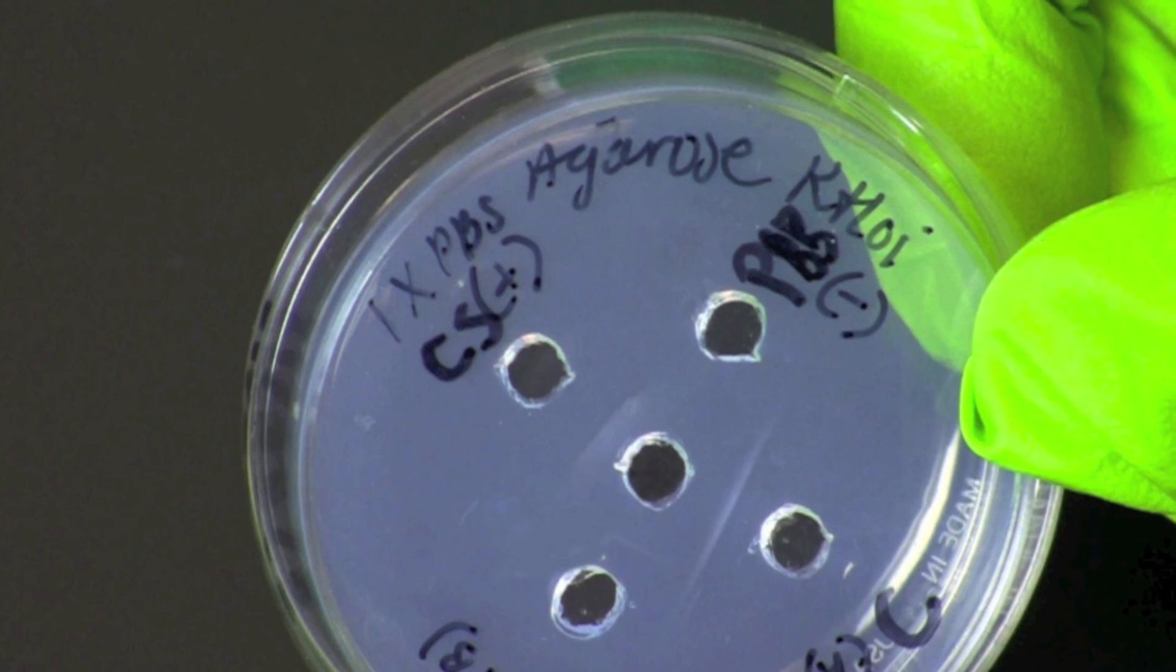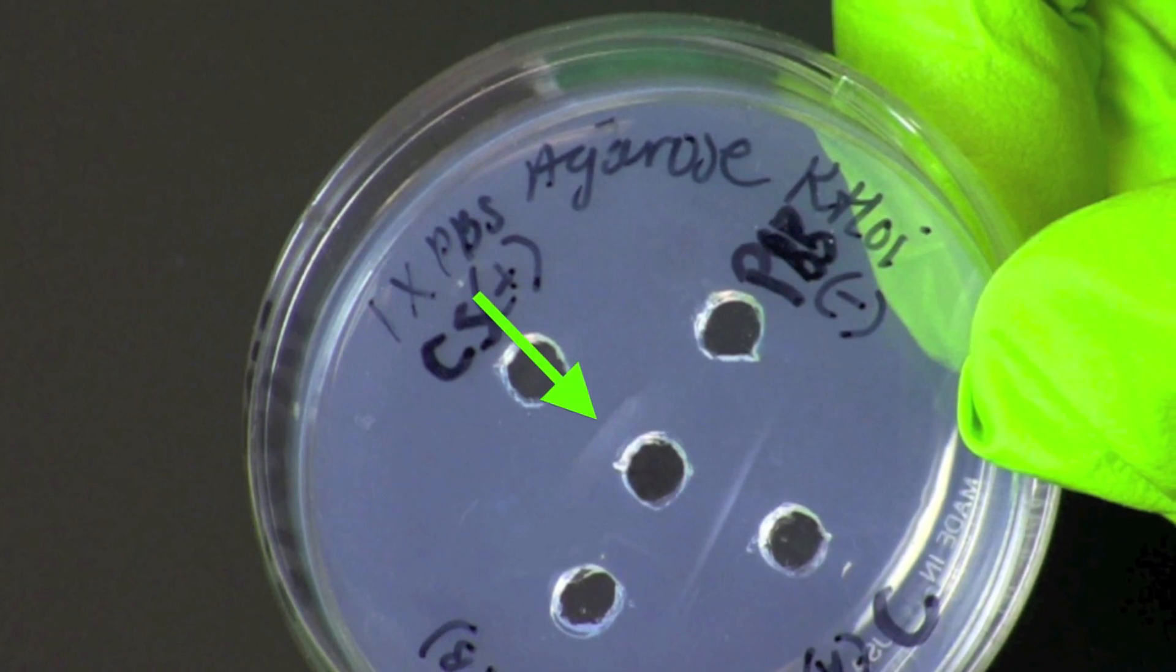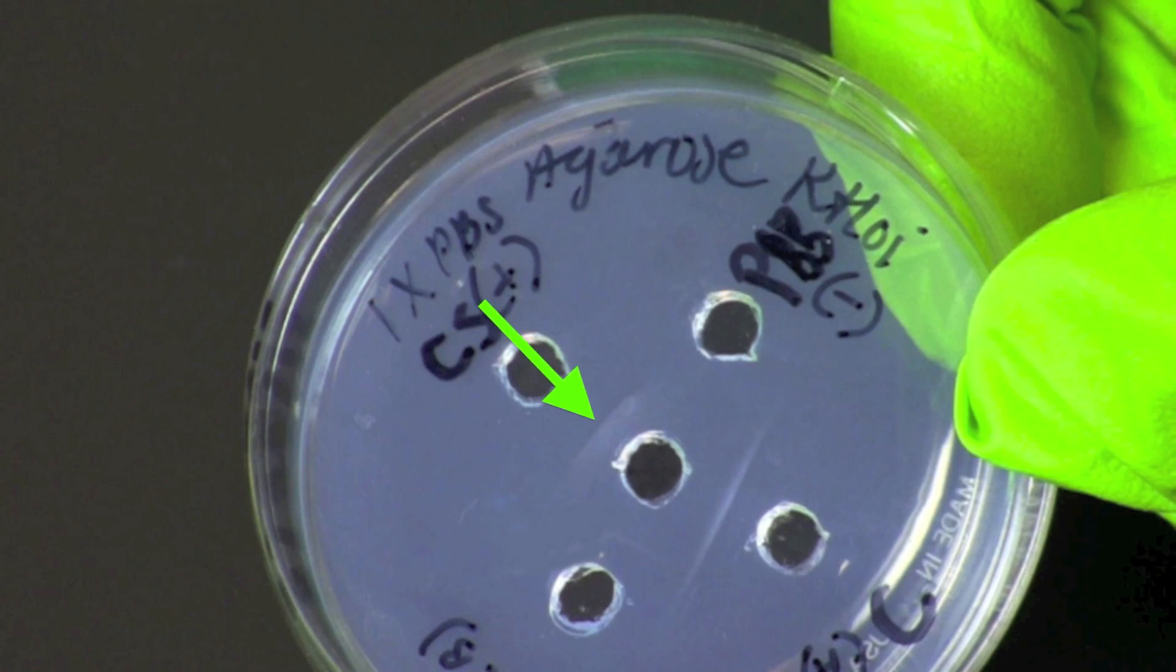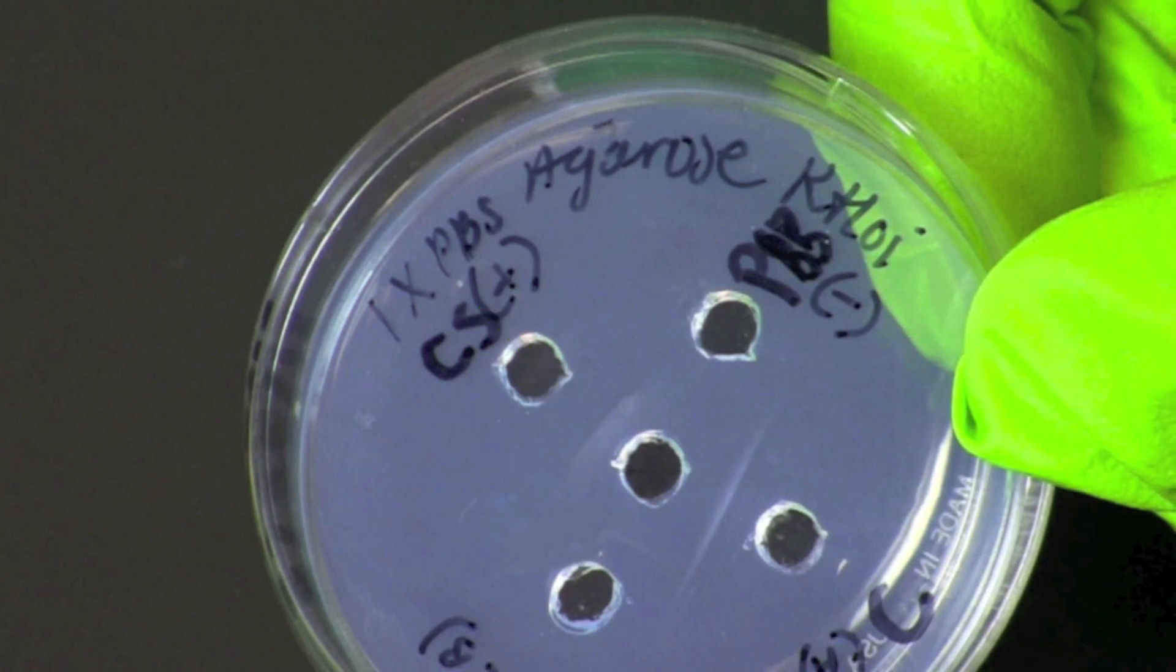Examine the plates each day until a visible white line has formed in the area between the hole where the positive control was added and the hole where the anti-chicken antibodies were added.